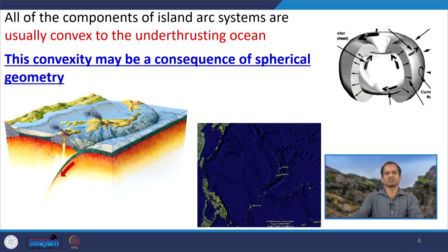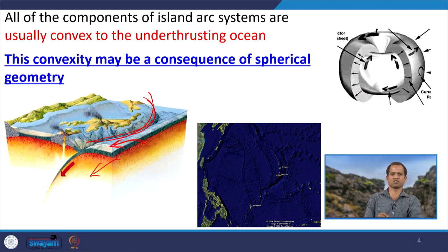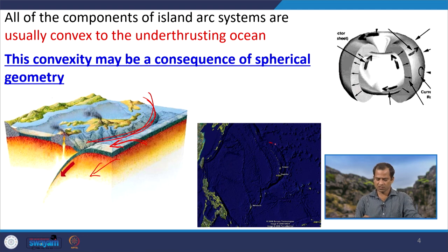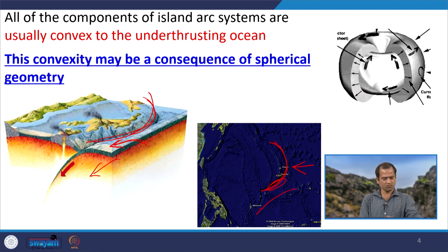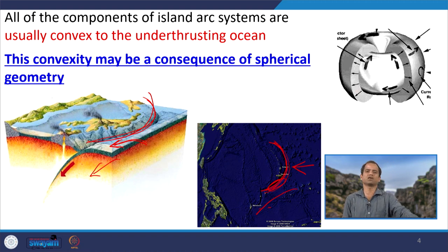All components of the island arc system are typically convex toward the underthrusting oceanic lithosphere. For example, the Japan arc is convex toward the Pacific, which is subducting beneath the Philippine plate. In the Google Earth image of the Mariana Trench, the arc is convex toward the Pacific plate going down beneath the Philippine plate. This convexity may be a consequence of the spherical geometry of the Earth.